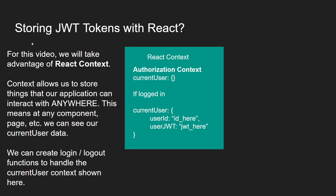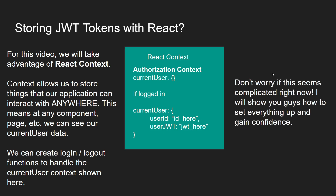For storing JSON web tokens with React, we'll take advantage of React context. Context is powerful because it allows us to store things in our application that can be interacted with anywhere — any component, any page. We can create login and logout functions to handle the current user context. We're going to make something called an authorization context. The user can be empty if not logged in, or if the user does log in, we can store all the data from our JSON web token inside the current user object. Context can be interacted with anywhere in our entire React application.